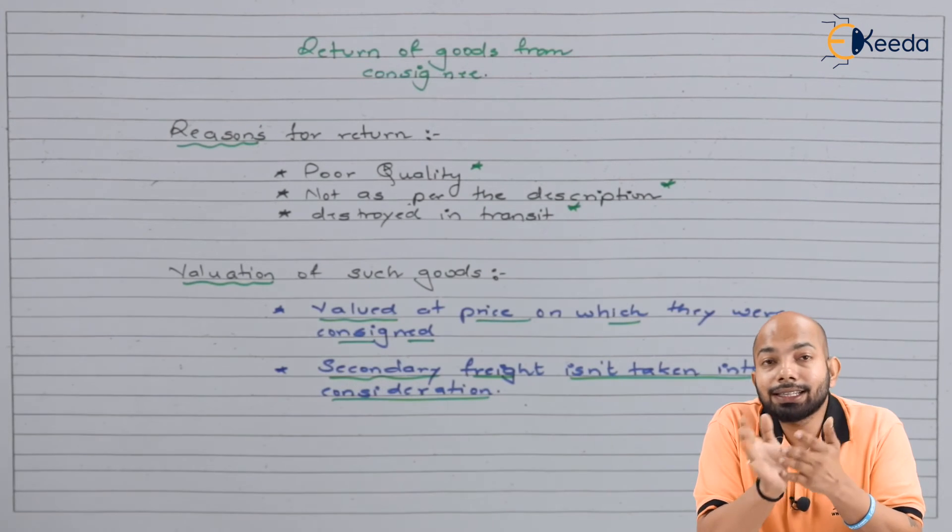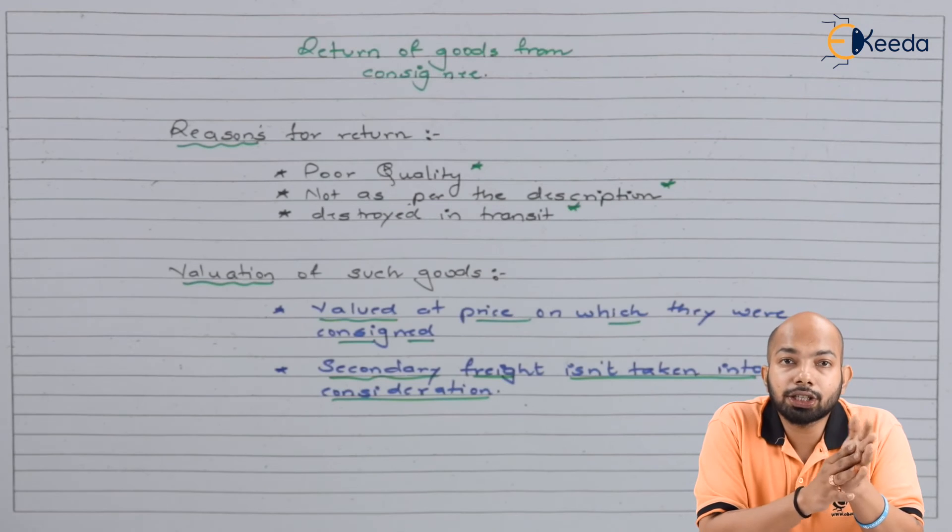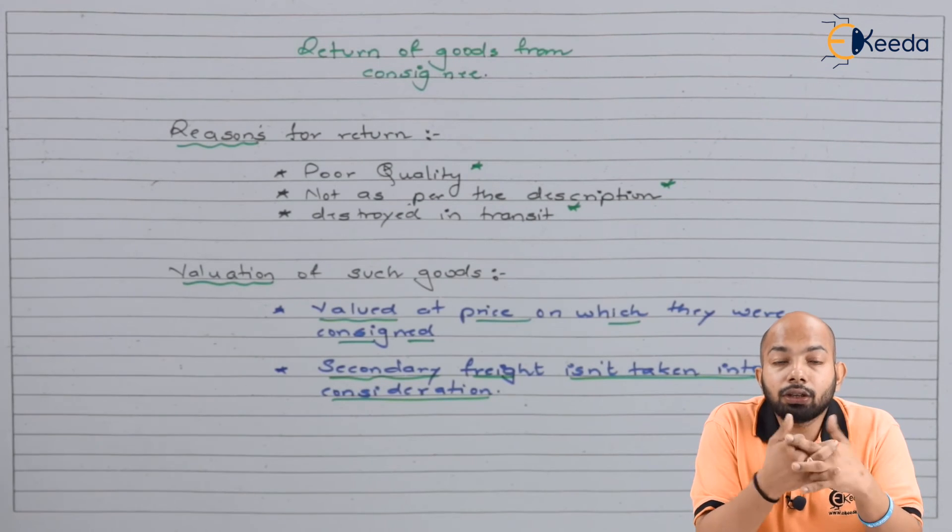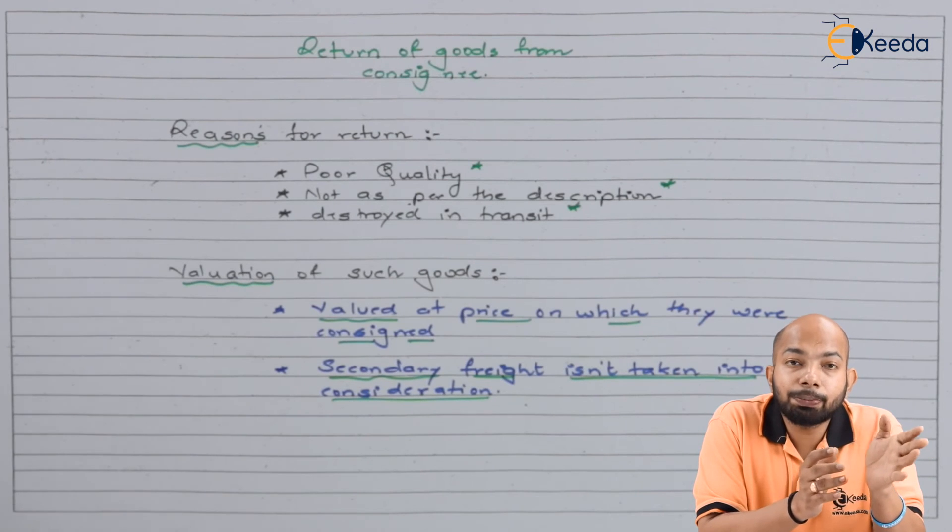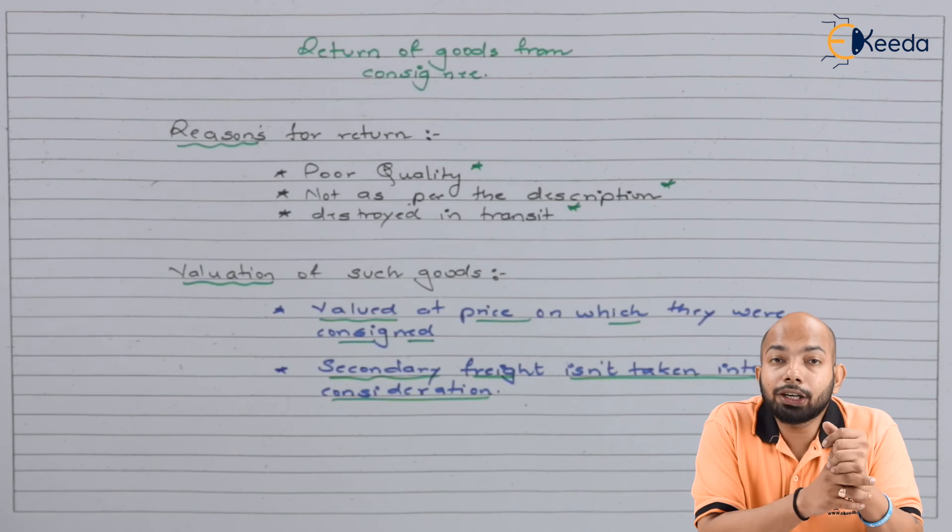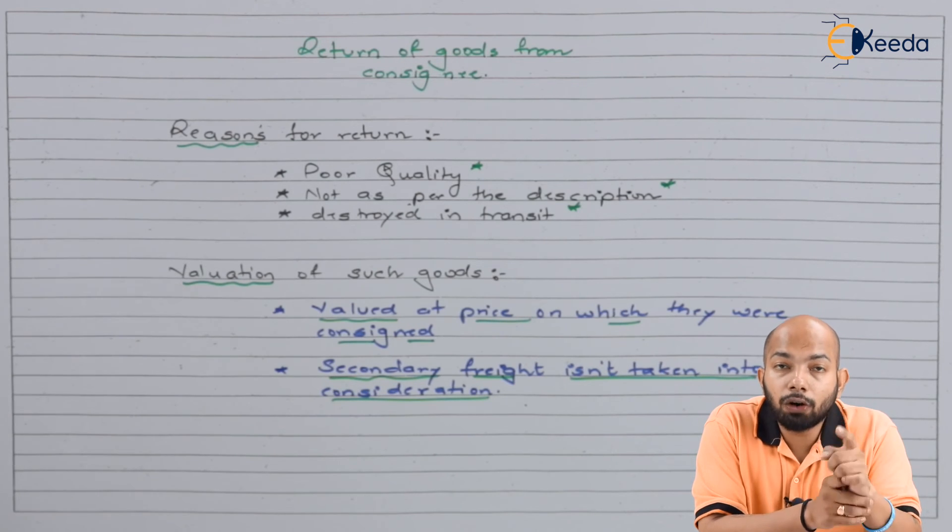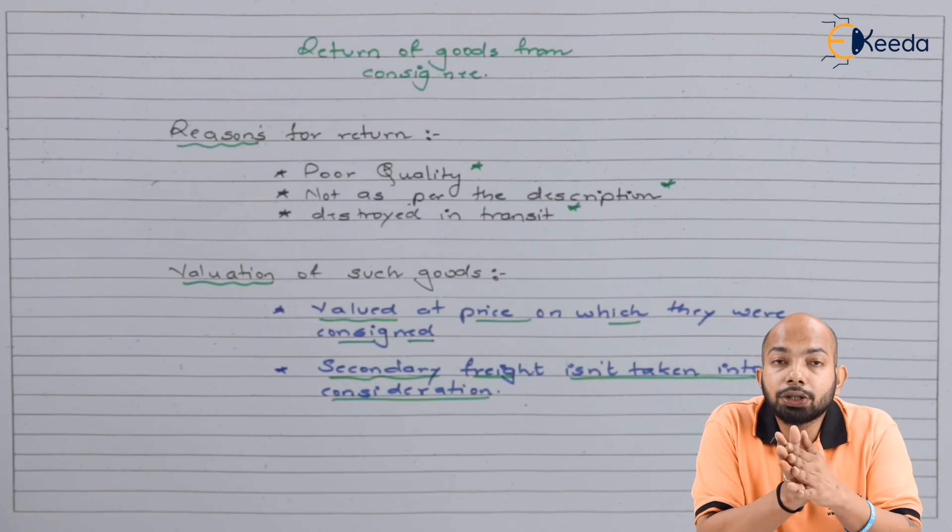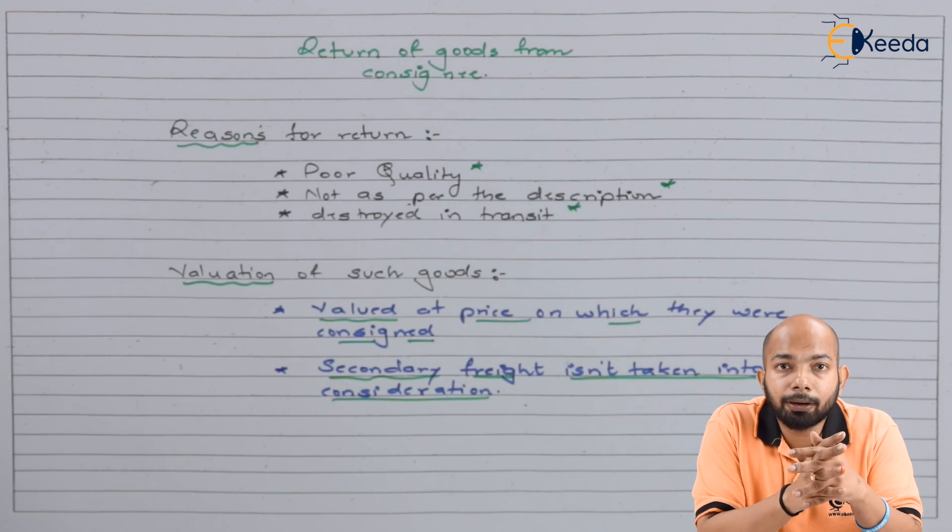Hence, secondary freight is not considered. Only expenses directly related to taking the goods initially and expenses incurred by the consigner are taken into consideration when valuing such goods in any consignment.